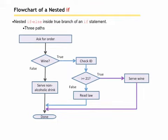Here's an example of what this might look like in a flowchart. Ask for their order. Did they order wine? If true, check their ID — is their ID greater than or equal to 21? If true, serve the wine. If not true, read them the law. If they didn't order wine, then serve them a non-alcoholic drink.